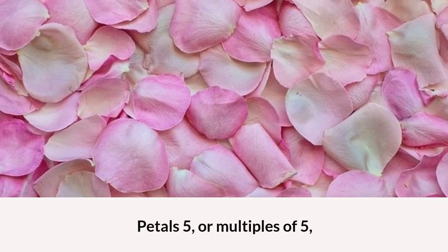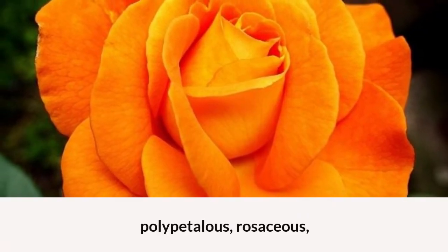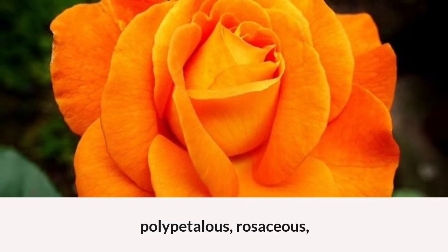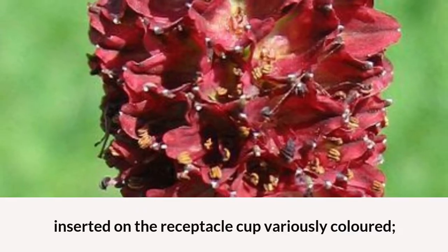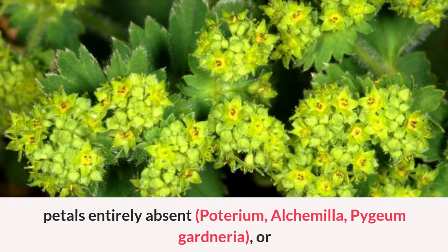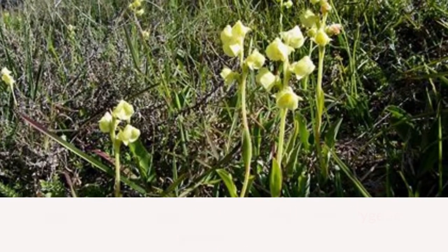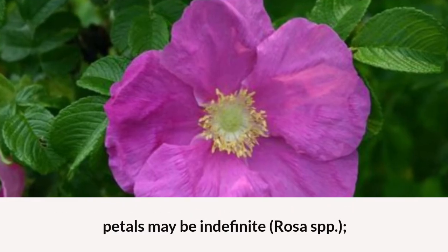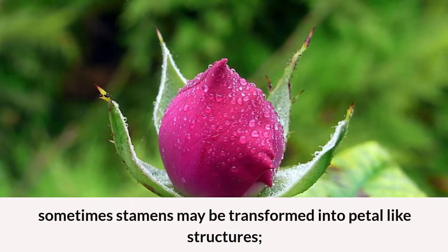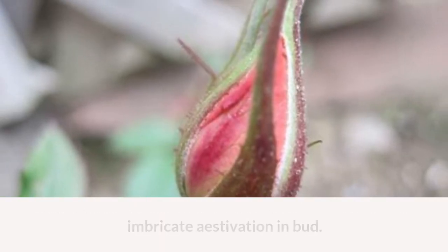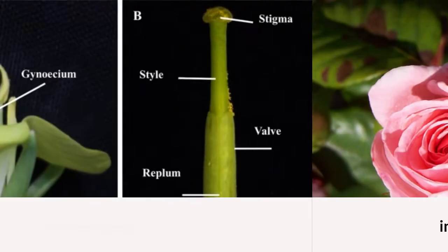Petals: five or multiples of five, polypetalous, rosaceous, inserted on the receptacle cup, variously colored. Petals entirely absent in Poterium, Alchemilla, Pygeum, and Gardenia. Petals may be indefinite in Rosa spp. Sometimes stamens may be transformed into petal-like structures; imbricate aestivation in bud.